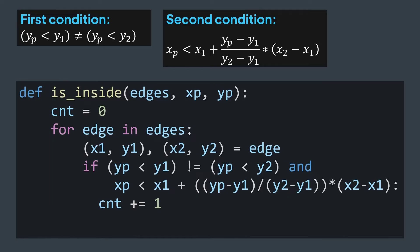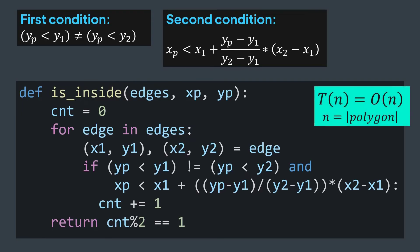After doing so with all edges, we check if the number of crossed edges is odd. We return counter modulo 2 equal to 1. And we're done, this solution is in O of n time, where n is the number of vertices of our polygon, because we traverse all edges.